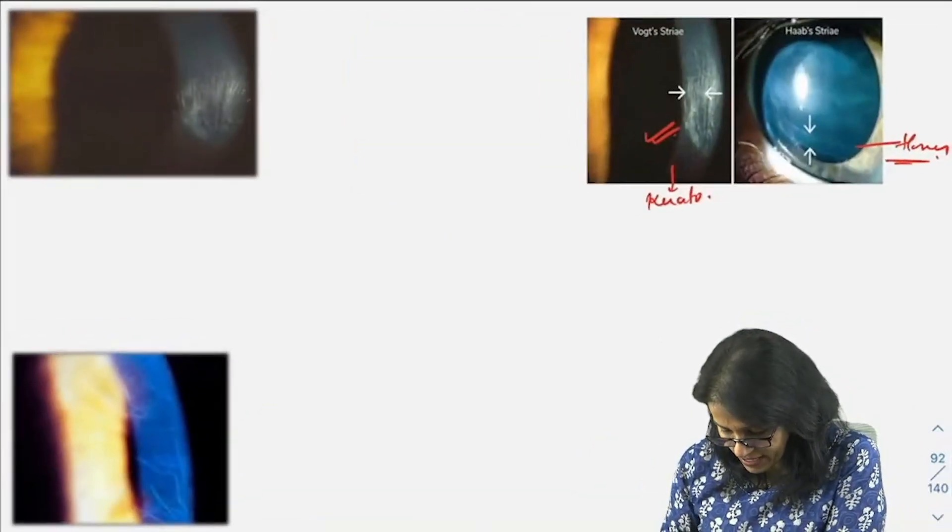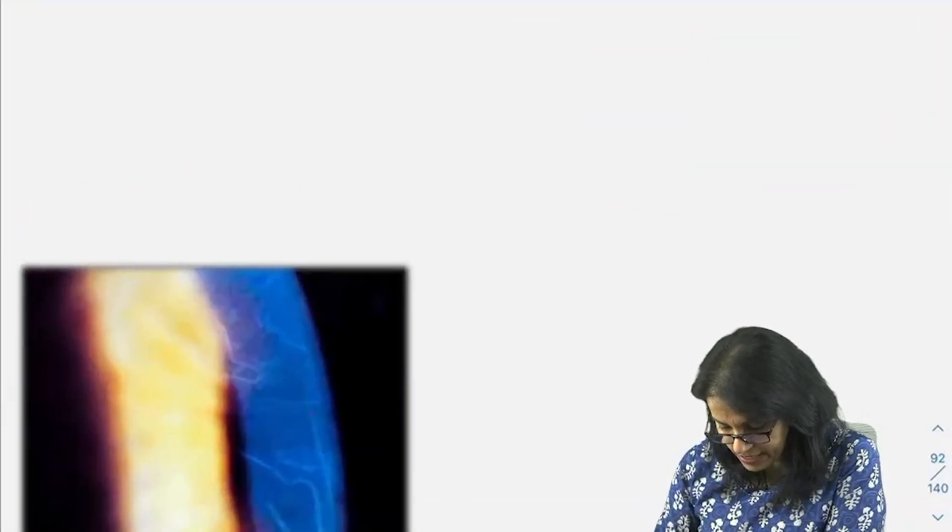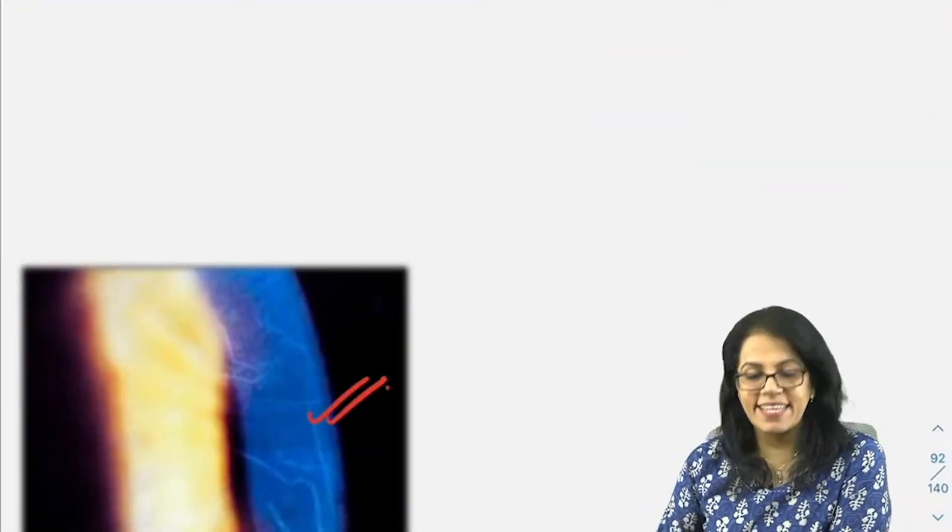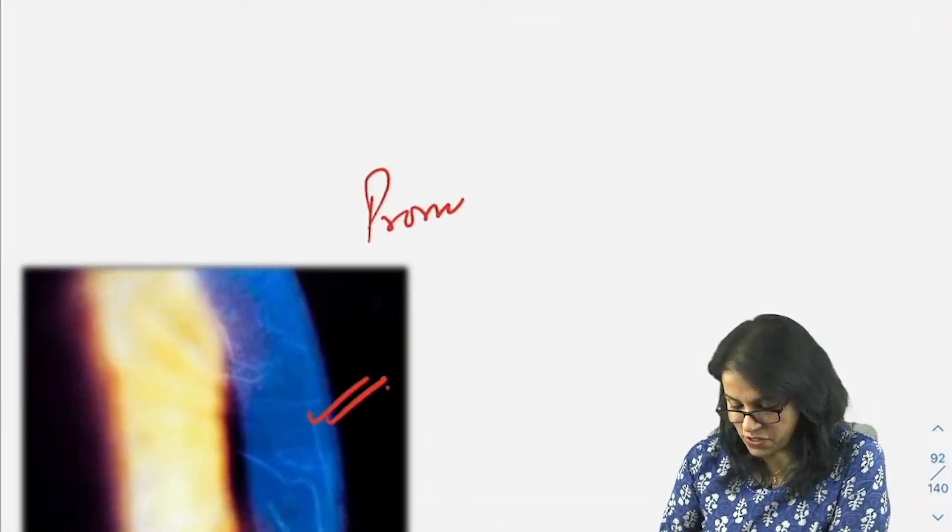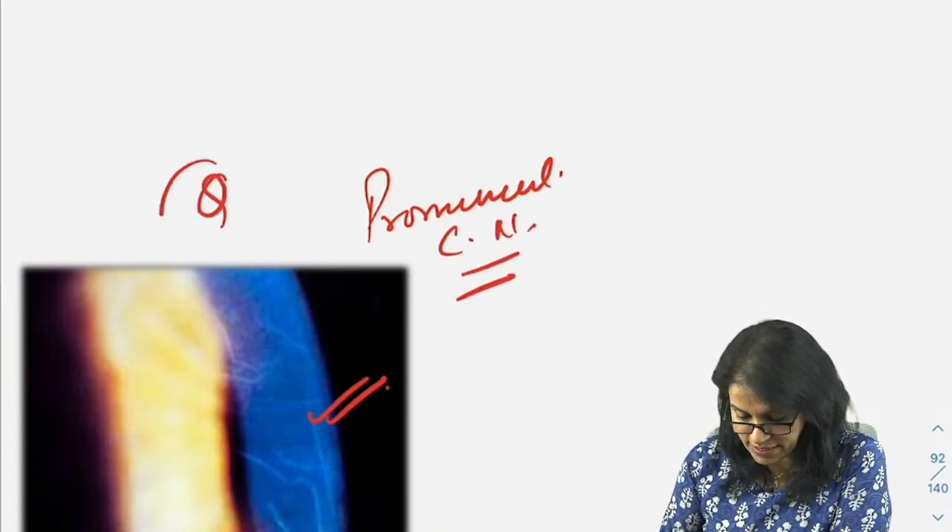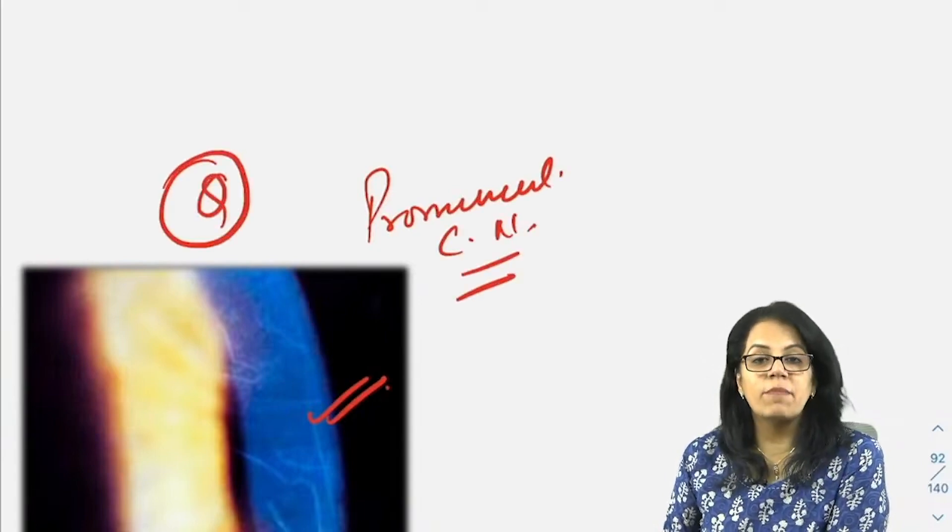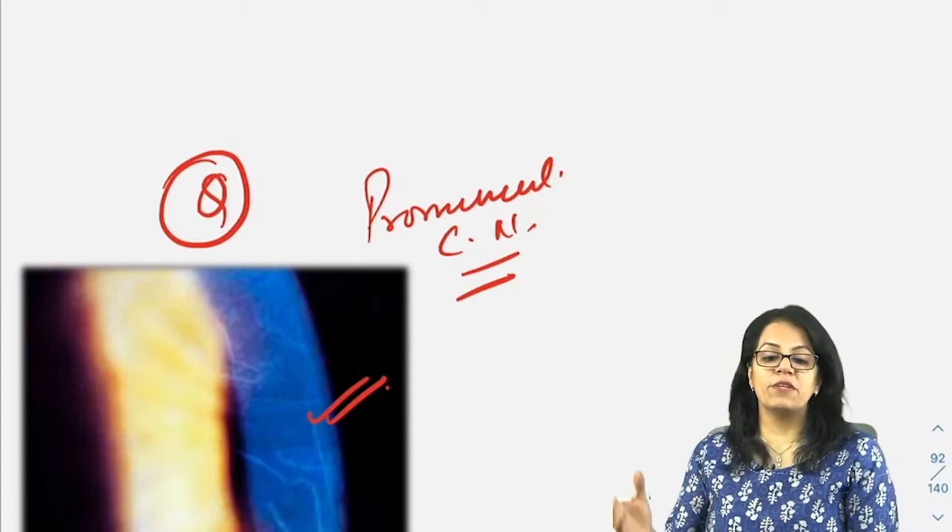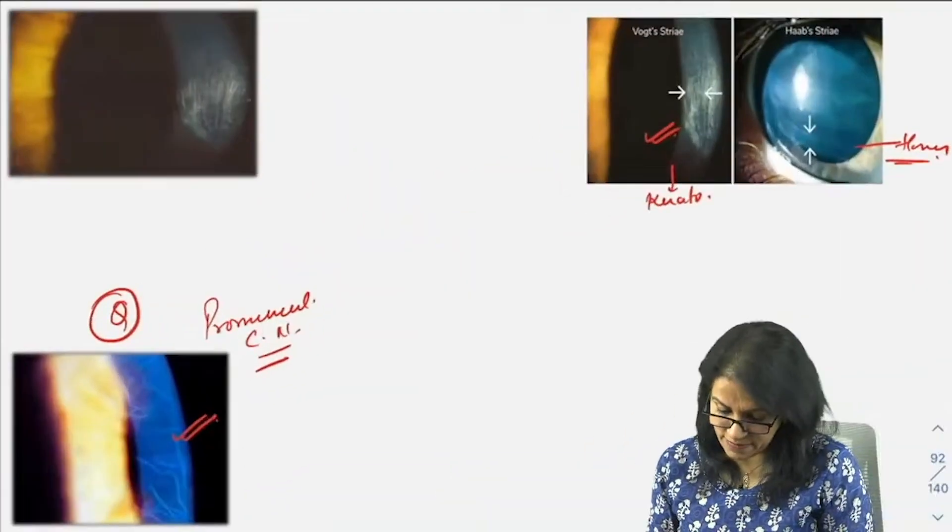What is this? This is your prominent corneal nerves due to corneal thinning. This is again a feature of keratoconus, prominent corneal nerves. This is not happening due to thickening of nerves, it is happening due to thinning of the cornea.